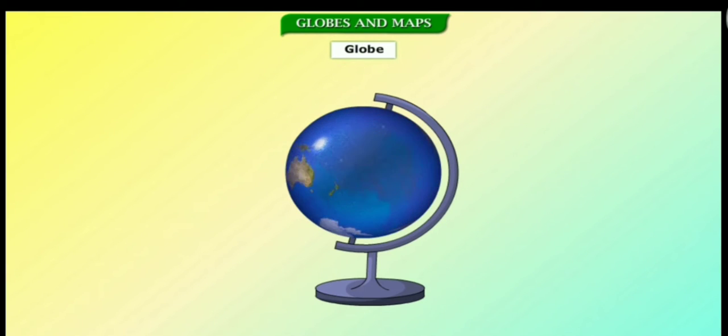A globe is a spherical model of the Earth. It has the world map drawn on it. It is mounted on an axle so that it can be rotated.